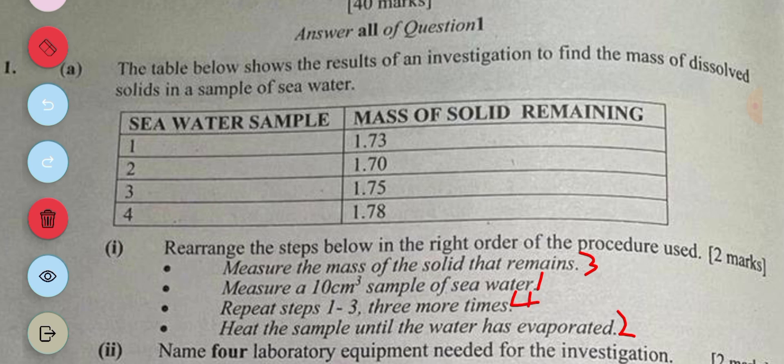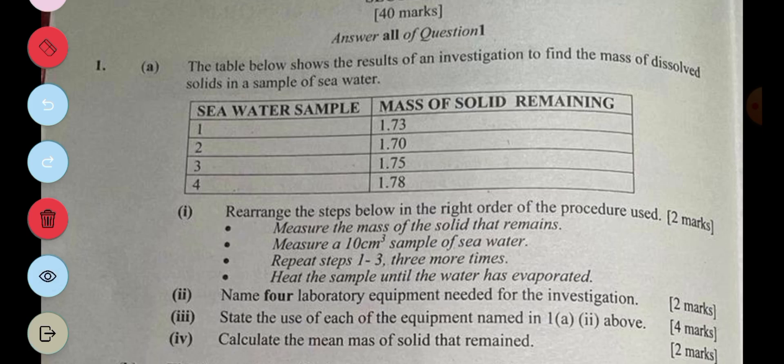Then the next one, you're asked to name four laboratory equipment needed for the investigation. Now you can just go to the steps and then get the apparatus that is used. So with measuring, you first of all you need a measuring cylinder.